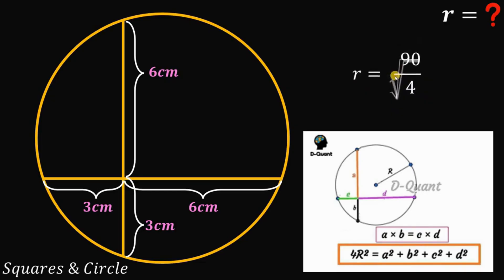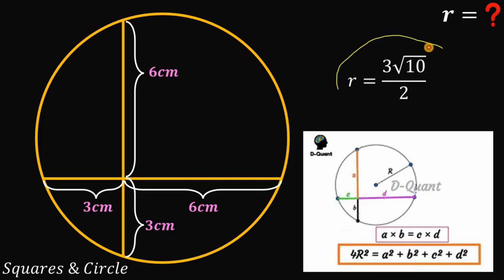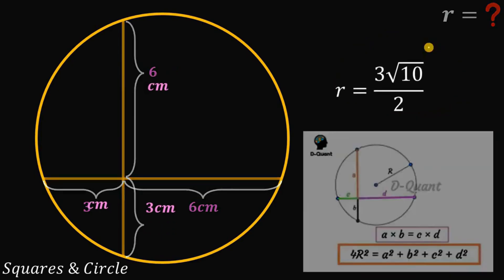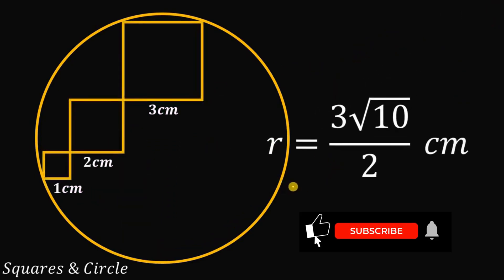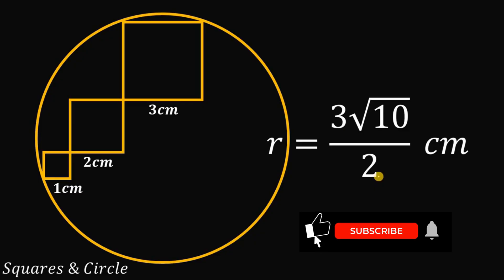We simplify the square root of 90 over 4 as the square root of 90 over the square root of 4. For 90, we use the factor 9 times 10, since 9 is a perfect square, so the numerator is 3 times the square root of 10, and the denominator is just 2. Therefore, the length of the radius of this big circle is 3√10 over 2 centimeters. And as always, we are done.